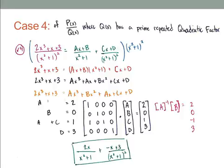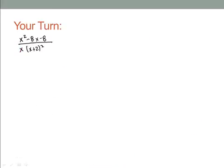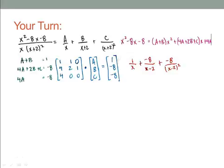This is a heavy video — I suggest rewinding and making sure you understand each step for cases 1 through 4. Now here are some practice problems. The first one is your turn — pause the video and try it. When you come back: yes, that was a repeated linear term, Case 2. You should have the factored form before setting up equations. The answer is 1 over x, plus negative 8 over (x minus 2), plus negative 8 over (x minus 2) squared.